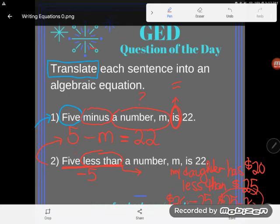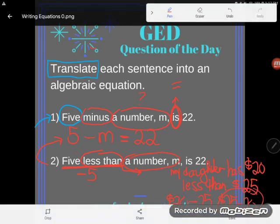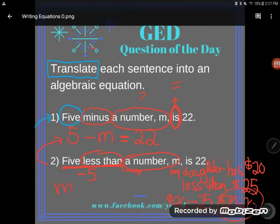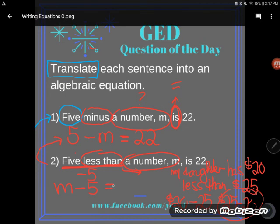It says five less than a number m. The number m is what you're subtracting five from. Just like the $25 I had was what I was subtracting the 20 from. And so I'm going to start with that number m and then I'm going to subtract five from that. That's five less than a number m and then that is equal to 22.